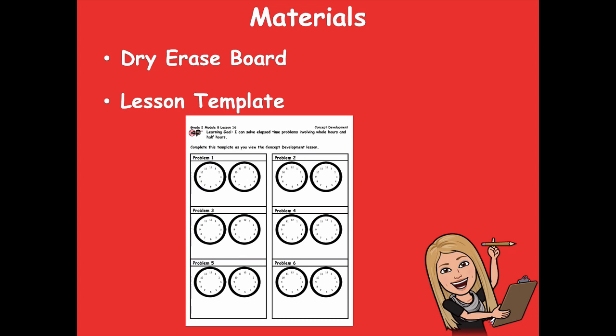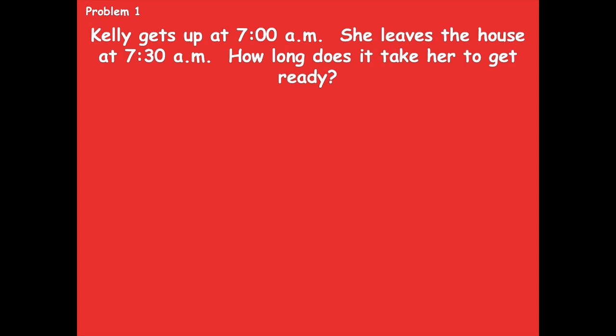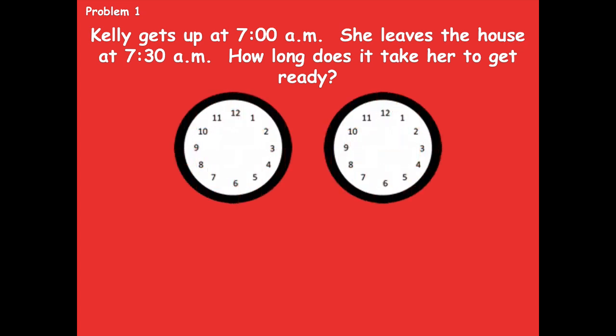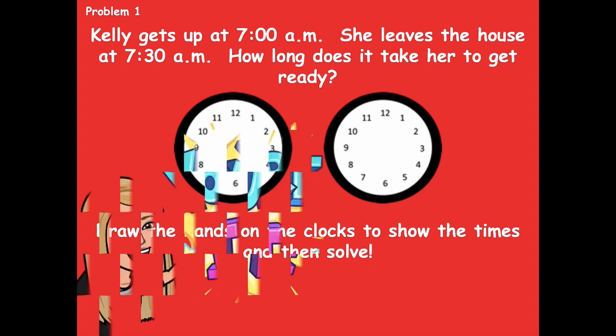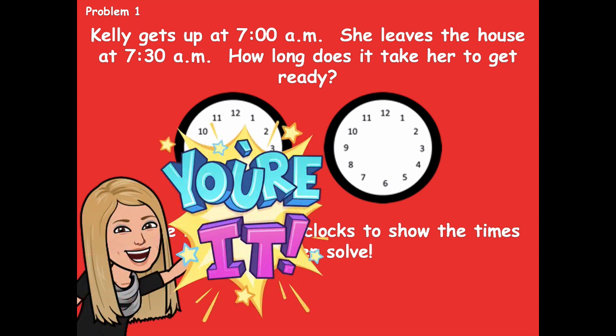Let's get started with problem one. Kelly gets up at 7 o'clock a.m. She leaves the house at 7:30 a.m. How long does it take her to get ready? On your two clocks, you're going to draw the hands to show the times and then solve the problem — draw 7 o'clock on one clock and 7:30 on the other. Go ahead and pause the video, solve this problem, and then click play when you're ready to go over it together.